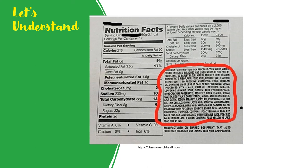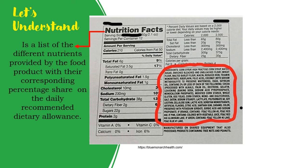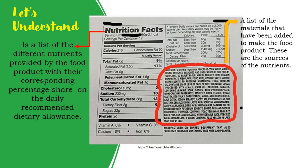In the nutrition facts section, we can see a list of the different nutrients provided by the food product with their corresponding percentage share of the daily recommended dietary allowance. The highlighted part shows the ingredients — a list of the materials added to make the food product. These are the sources of the nutrients.